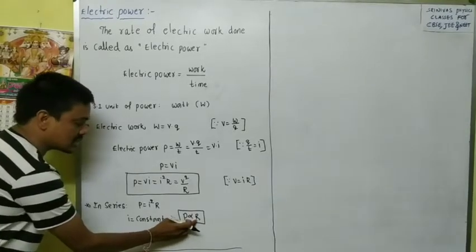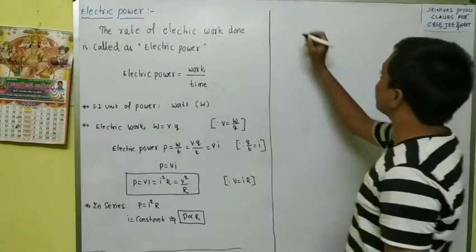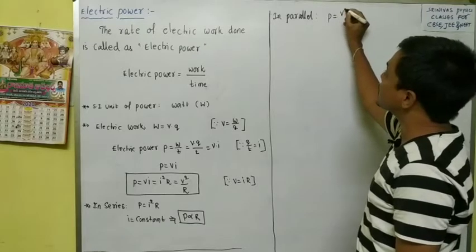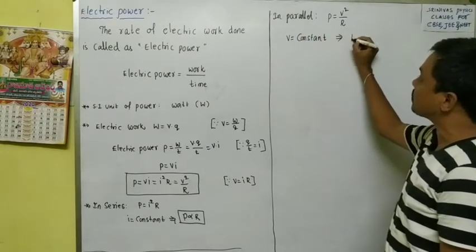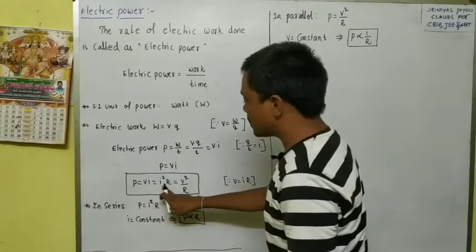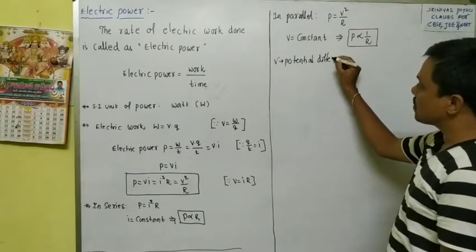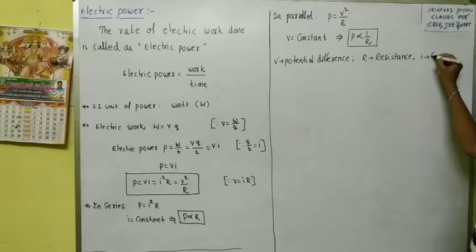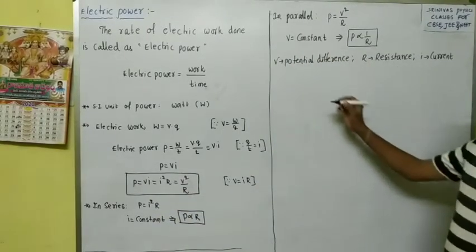The appliance which has more resistance has more power. Power is the rate of electric work done. In parallel combination, we write the formula P = V²/R, because in parallel the potential difference is constant. When potential difference is constant, power is inversely proportional to resistance. We have the power formulas VI, I²R, and V²/R, where V is potential difference, I is current, and R is resistance.